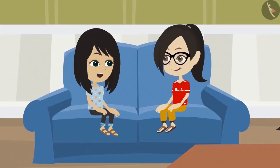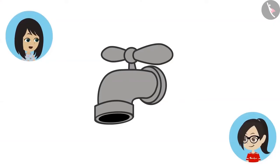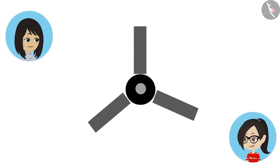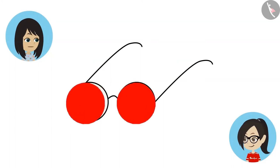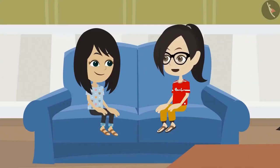I did not notice that. In the same way, the taps installed in our house also have round holes from where the water comes out. The fan also has the round shape in the center. Papa's glasses also have two round shapes. This means that a circle is used in those objects too, which are not circular in shape.